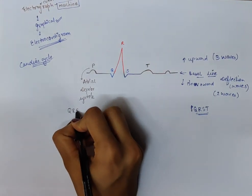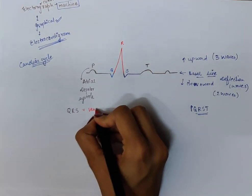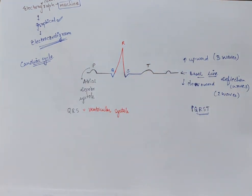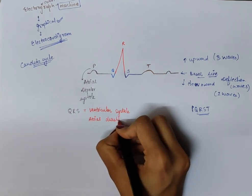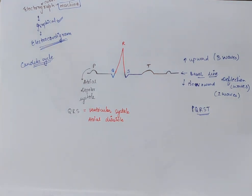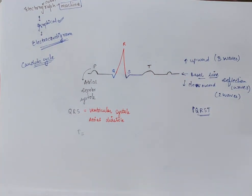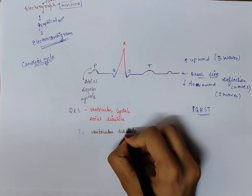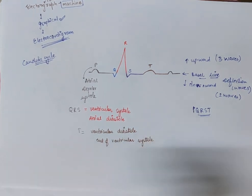Next is the Q, R, S wave. This QRS wave is representing the ventricular systole — at this time, the ventricles have undergone systole. We can also say it is showing that the atria have undergone diastole. The last wave is the T wave, which shows the ventricular diastole, or the end of ventricular systole.